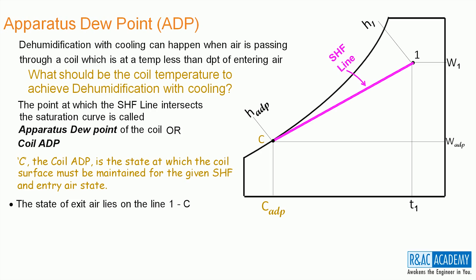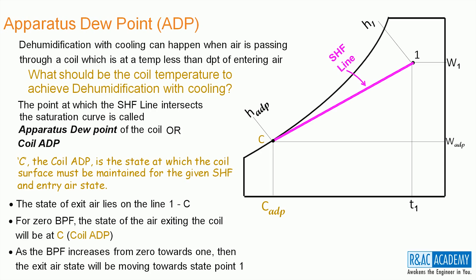During this process, the state of the exit air lies on the line joining 1 to C. For a zero-bypass factor, the state of the air exiting the coil will be at C, i.e. coil ADP. As the bypass factor increases from 0 towards 1, then the exit air state will be moving towards state point 1. For the bypass factor of x, the state of the air exiting the coil will be at 2 with its properties being T2, W2 and H2.